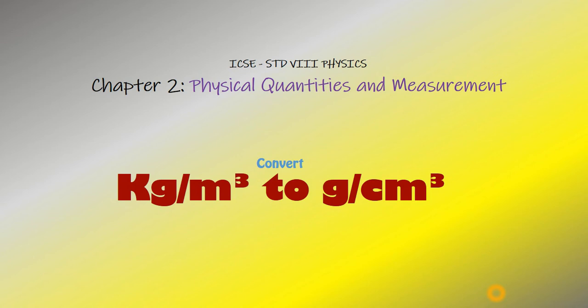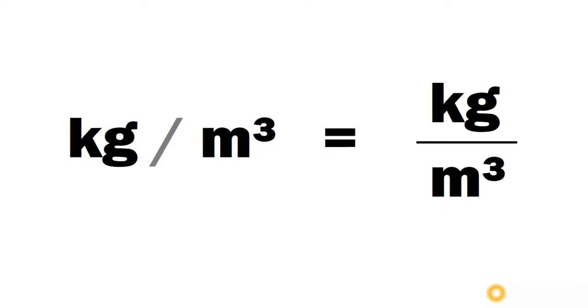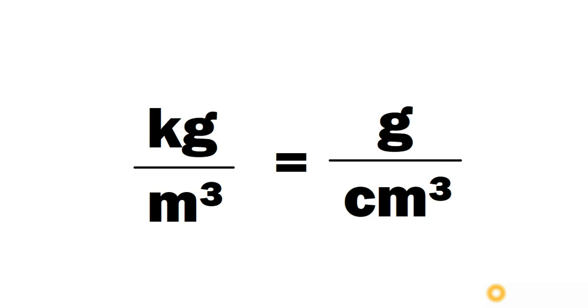Hi everyone. Here we are going to discuss the conversion of kilogram per meter cube to gram per centimeter cube. Kilogram per meter cube is actually a fraction which can be written as kilogram divided by meter cube — kilogram is in the numerator and meters in the denominator. This means one kilogram by one meter cube needs to be converted into gram by centimeter cube.